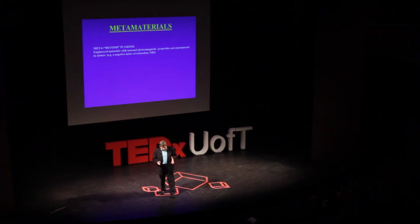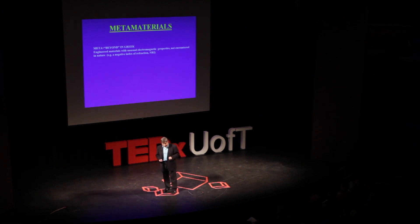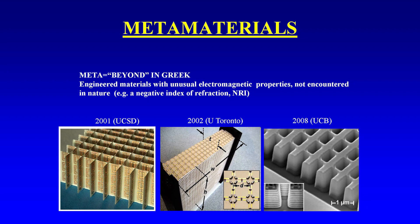Metamaterials is a new field in which we try to make engineered materials — materials that do not exist in nature — but which have unusual electromagnetic properties, such as a negative index of refraction. The first two examples shown are for microwaves and radio waves, and the one on the right is for manipulating light, so it has a much finer structure.